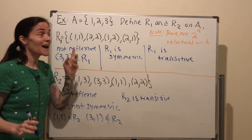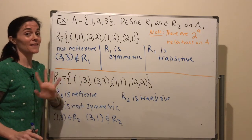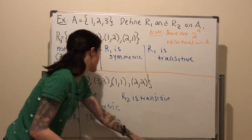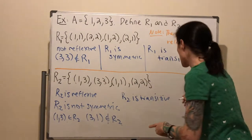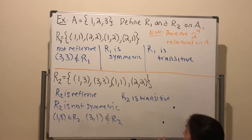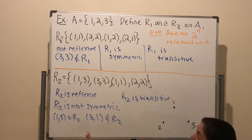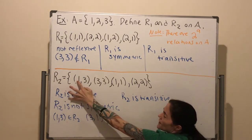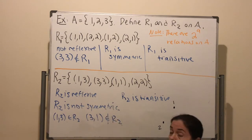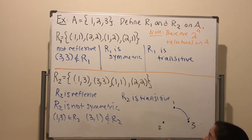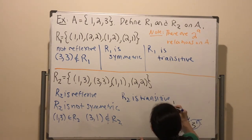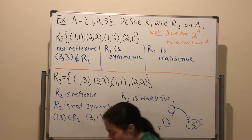Another thing I want to show you when you have a finite set A is you can depict a relation with a diagram. You list the elements of A — it's 1, 2, and 3 — and then draw arrows because there's an order here. You draw an arrow from the first to the second element of each pair. For R2: 1 relates to 3, 3 relates to 3, 2 relates to 2, and 1 relates to 1. This relation has 4 elements and 4 arrows.